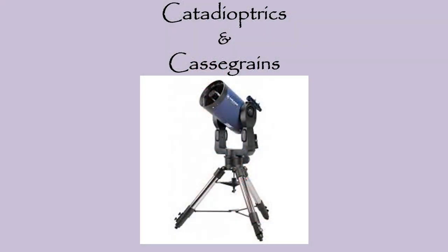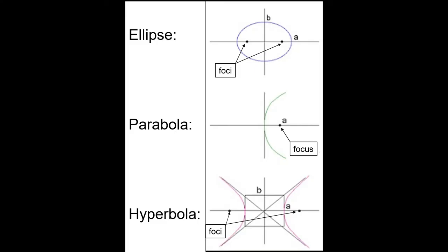Catadioptric telescopes use lenses and mirrors working together to collect an image. They are descended from a class of reflector telescopes known as Cassegrains. Catadioptric Cassegrains explored using mirrors of all the various curved geometric figures that contain focus points: parabolas, hyperbolas, and ellipses. Finally, telescope designers went back to the idea of using cheaper-to-make spherical primary mirrors.